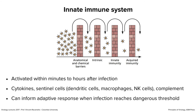Now we're going to talk about innate defenses for the rest of today. If pathogens get through anatomical, chemical, and intrinsic defenses, innate defenses are activated — this happens between minutes to hours after infection. The innate immune system comprises cytokines, sentinel cells including dendritic cells, macrophages, and NK cells, and a series of proteins in blood called complement. Innate defenses are very important on their own — they can stop a lot of infections. When they can't handle it, they tell the adaptive system, which then makes antibodies and cytotoxic T cells.